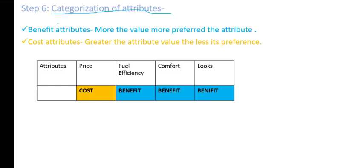Step number 6: categorization of attributes. Categorize them into benefit attributes and cost attributes. Benefit attributes are those in which a higher value is preferable — for example, fuel efficiency, comfort, and looks. Cost attributes are those where a greater value means less preference. Price is a cost attribute.